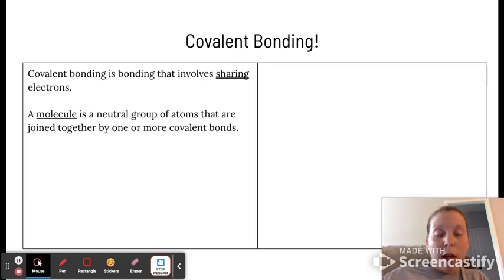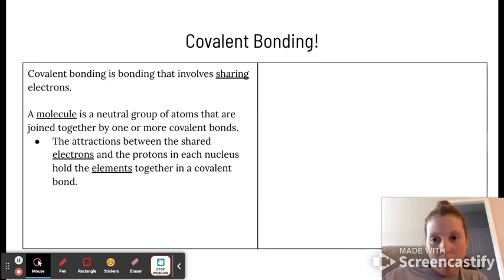Some terms you need to know: a molecule is a neutral group of atoms joined together by one or more covalent bonds. This is where we've got sharing of electrons. For ionic compounds, we look at the word compound or formula unit. The attractions between your shared electrons and the protons of each nucleus of the atoms in that bond are what hold the elements together.